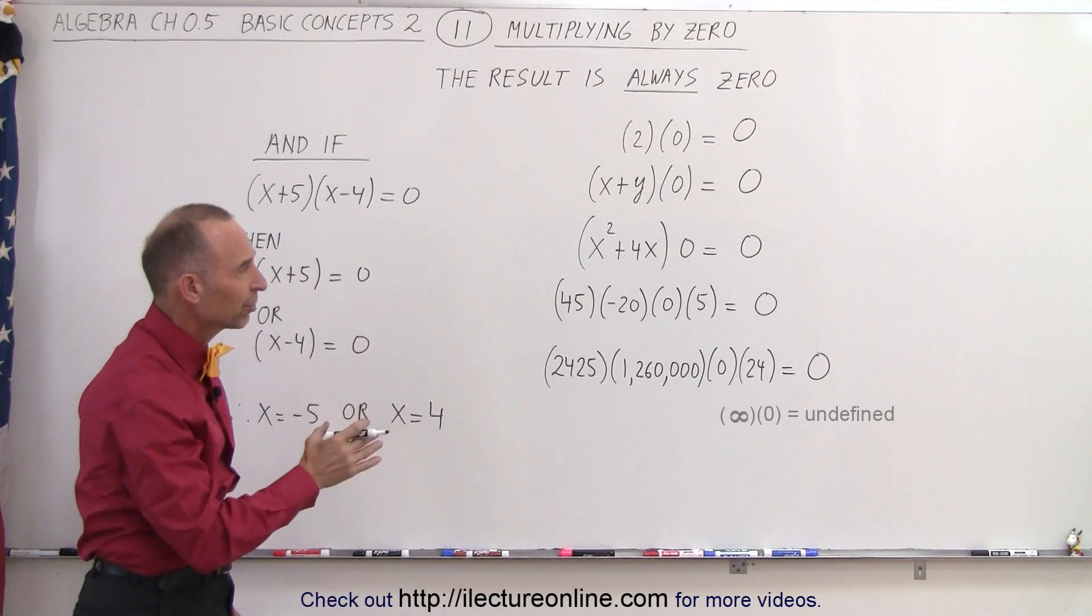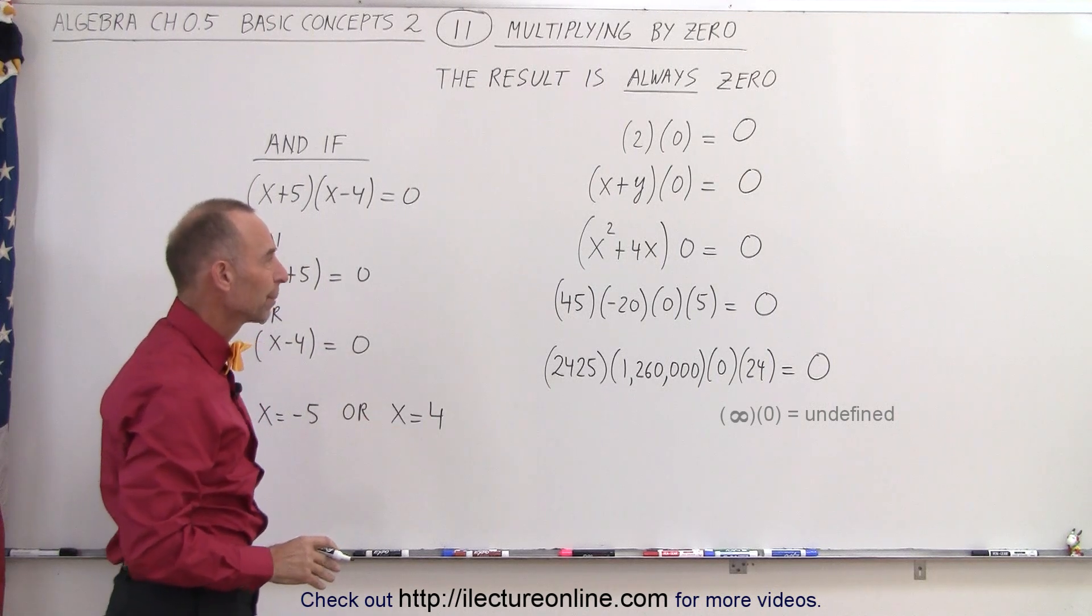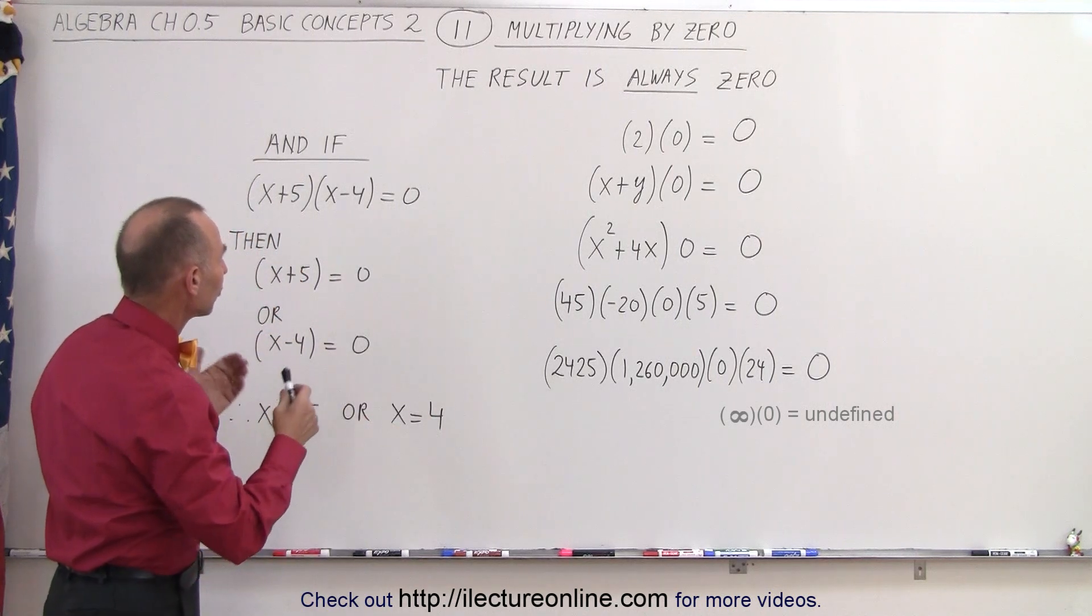So whenever you're multiplying numbers together, and at least one of them is zero, the answer will always be zero. And so now let's apply that to an algebraic concept.